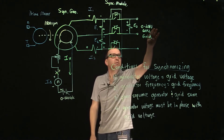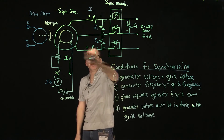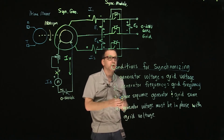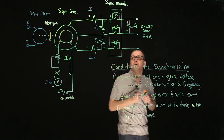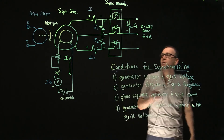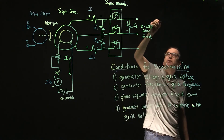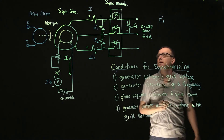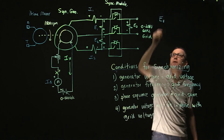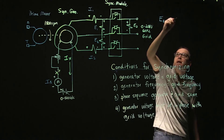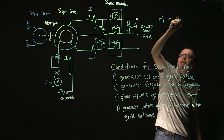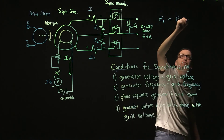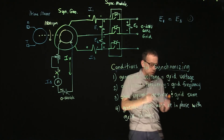The grid voltage is 208 volts. We want to increase the generator voltage until we get 208 volts — that will be condition number one. The meter we are using to observe the generator voltage is E1. We want to make E1 equal to E3, which is the grid voltage. This gives us condition number one.